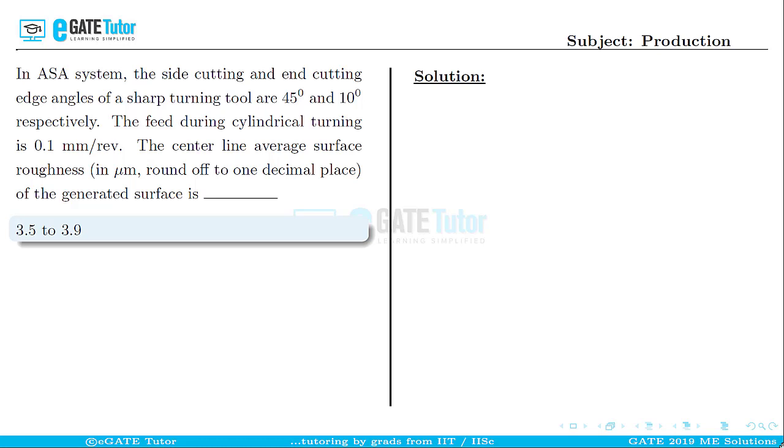This question is from production. In an ASA system, the side cutting and end cutting edge angles of a sharp turning tool are 45° and 10° respectively. The feed during cylindrical turning is 0.1 mm per revolution. The centerline average surface roughness (in μm, round off to one decimal place) of the generated surface is ____.